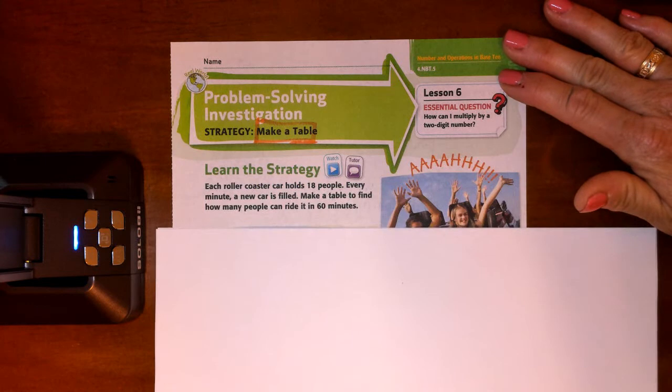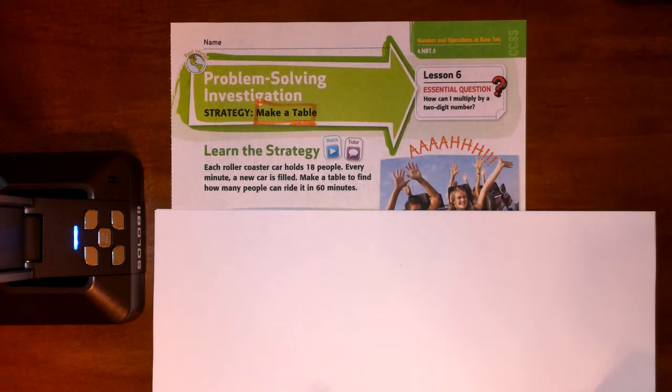All right, so our story problem is this. Each coaster car holds 18 people, every minute a new car is filled. So make a table to find out how many people can ride in 60 minutes.